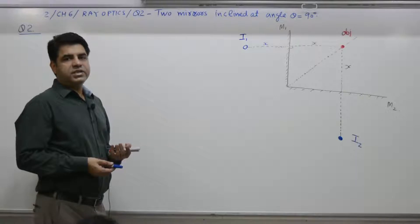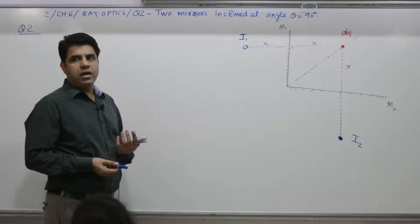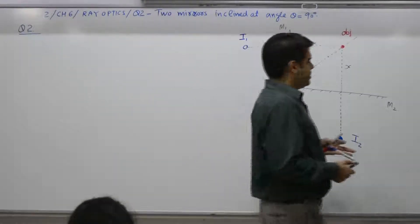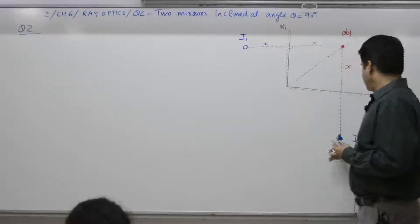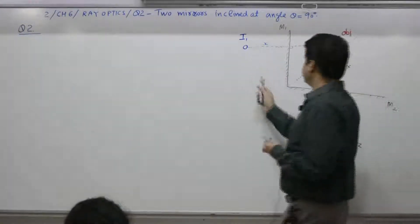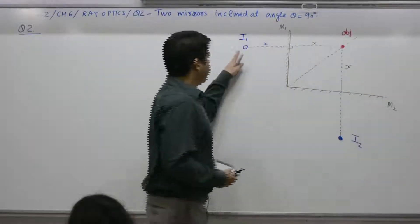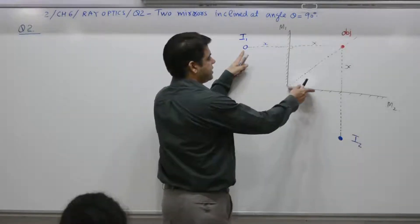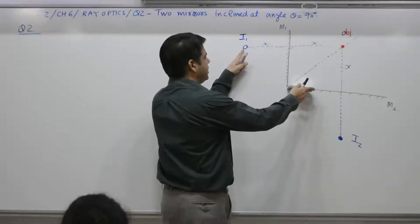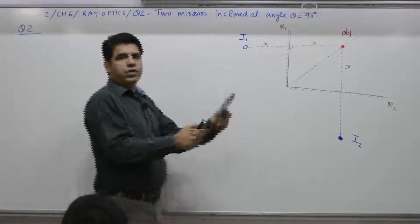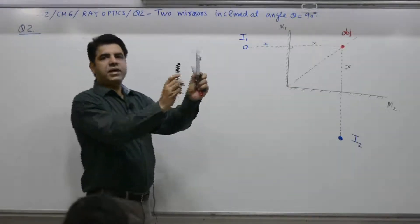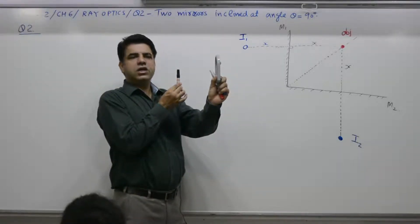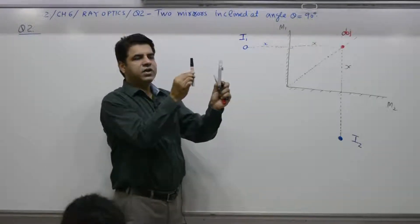What about the next image? The concept is that each image acts as an object for the other mirror. The condition is not that the object must be exactly in front of the mirror — if you place an object at any point in front of a mirror you get its image. A mirror divides the world into two parts.